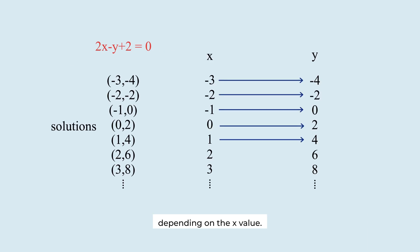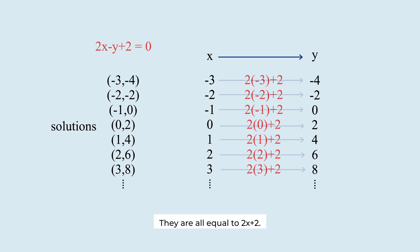The y value varies depending on the x value. These y values have a pattern. They are all equal to 2 times x plus 2. This rule is expressed in the form of y equals 2x plus 2. This is what we call a function.